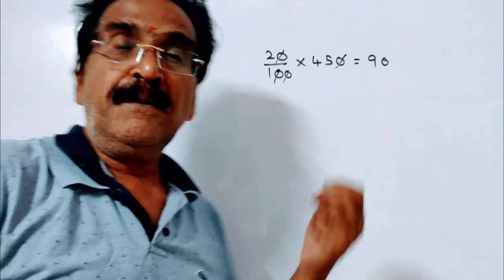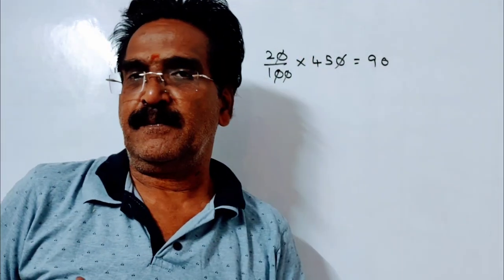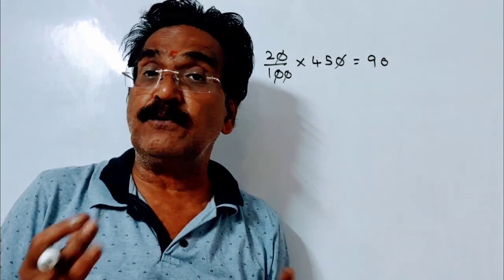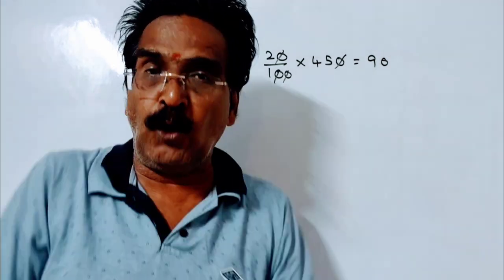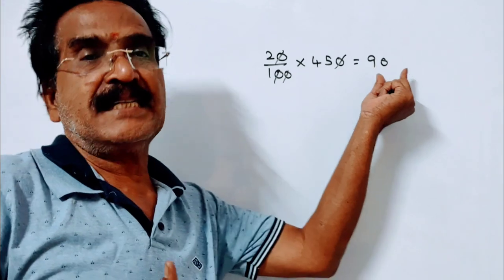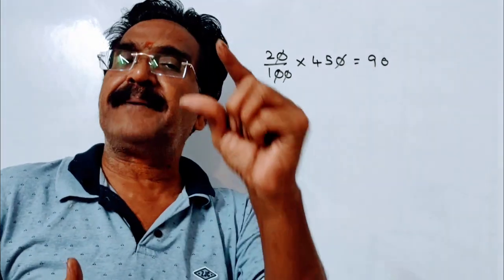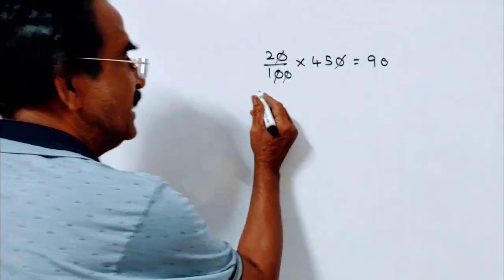Friends, because of this reduction, a person is able to get 50 kg rice more. So that means this 90 rupees must be the price of 50 kg rice.